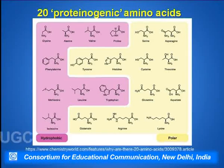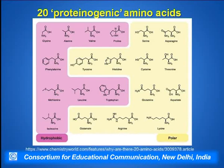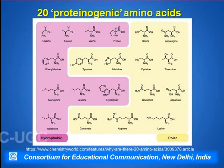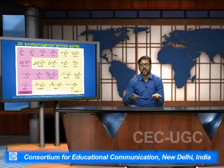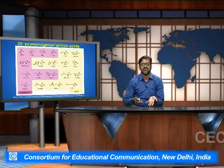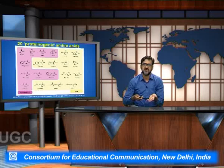These are the 20 proteogenic amino acids which are present in the biological systems. These amino acids have been classified into various forms — some are polar, non-polar, hydrophobic, or hydrophilic. Based on the R group, they have been classified into the various forms or structures.